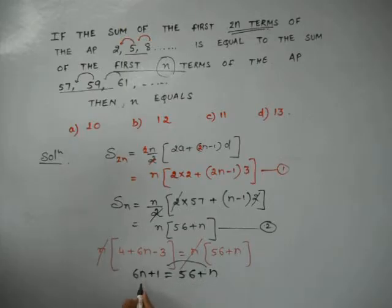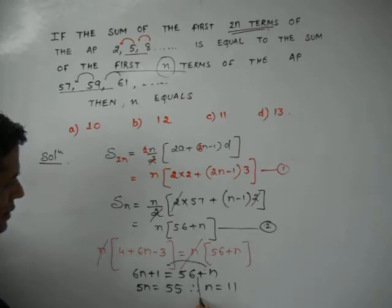So, this n transports to the left side. It is 5n equal to 55. Therefore, n equal to 11 is the answer.